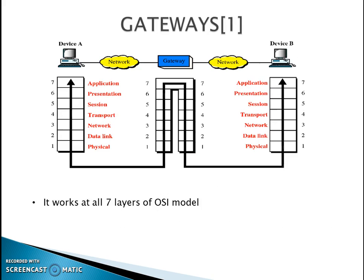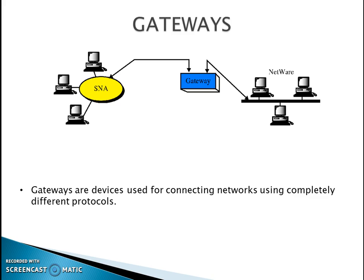Our last device is the gateway. Gateways are devices operational at all seven layers of the OSI model. They are intelligent devices that connect networks using two different protocols. As shown in the diagram, the gateway connects two different networks which are using two different protocols. Protocol translation is the main function of gateways.